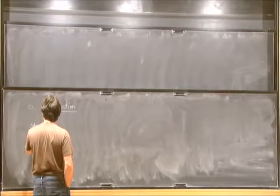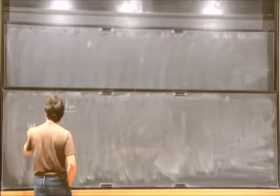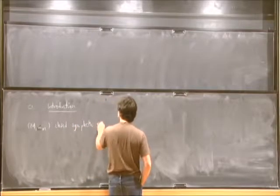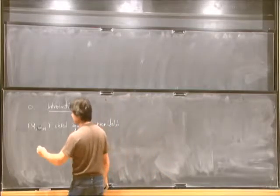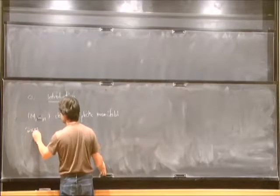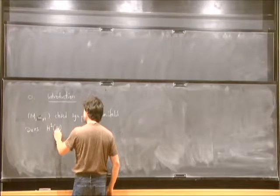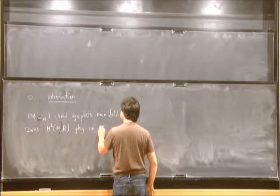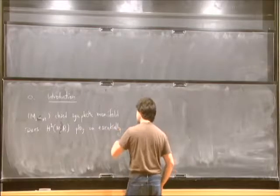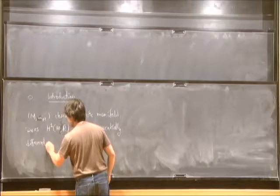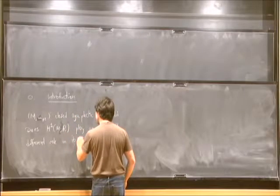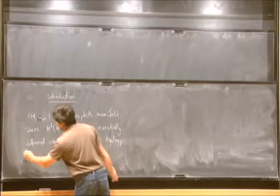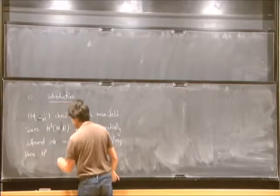Suppose I have a symplectic manifold. Does H1 of M — let's say with real coefficients — play an essentially different role in its symplectic topology than the higher odd cohomology groups?